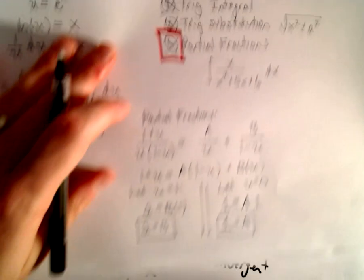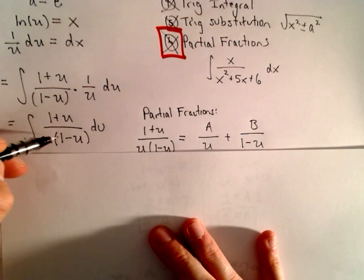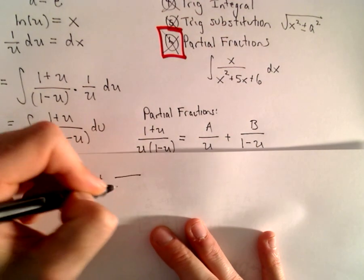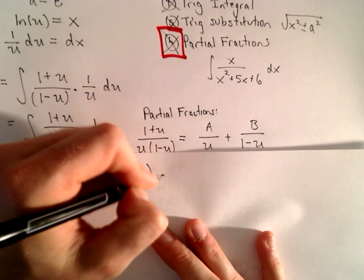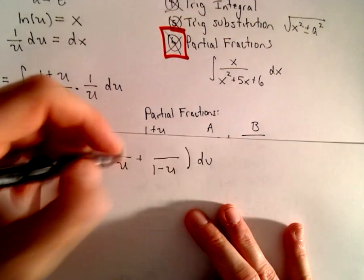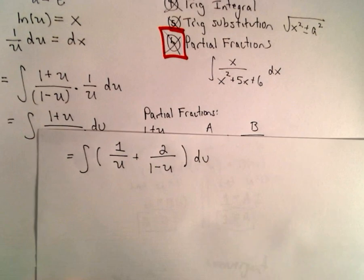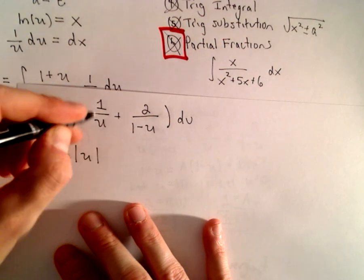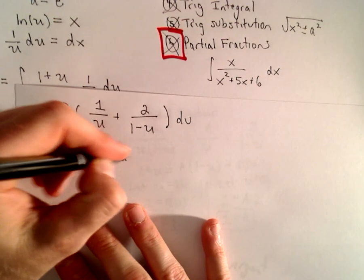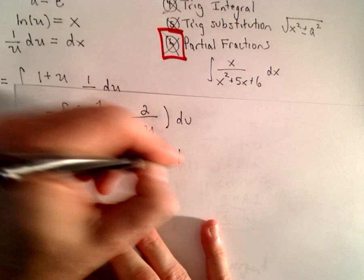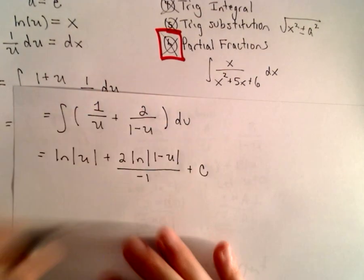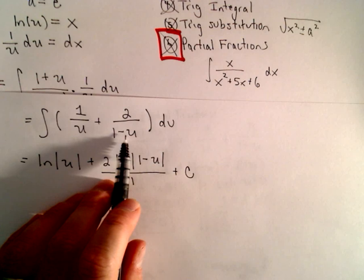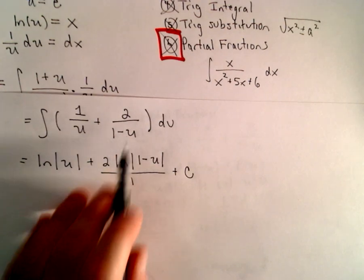Now we're getting close. We integrate (1 + u) / (u(1 - u)) split as A/u + B/(1 - u), with A = 1 and B = 2. The first term integrates to the natural logarithm of |u|. For the second term we get the natural log of |1 - u| divided by negative 1 — because with a linear factor in the denominator, whatever the coefficient is on the variable, you divide by it.